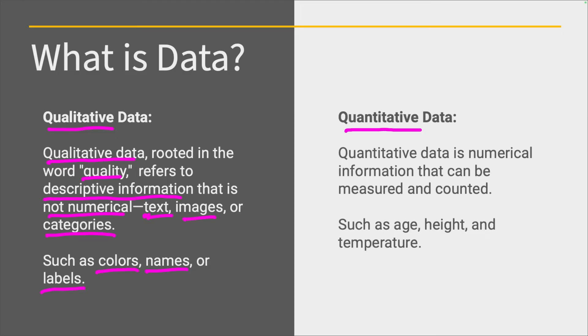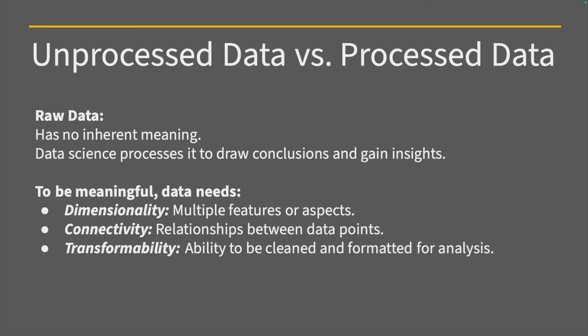So what is quantitative data? So here, quantitative, like quantity. Quantitative data is numerical information that can be measured or counted, because you can do that with numbers. You can count your age, what is the collective age of a group of people, what is your height, or the median height of a group of people. And the same thing with temperature, you can get the median temperature, the actual temperature, but it's some sort of numerical piece of information, like 74 degrees.